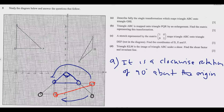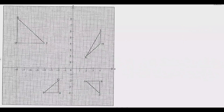Moving to Question B: triangle ABC is mapped onto triangle PQR by an enlargement. Find the matrix representing this transformation. For enlargement, the matrix is given by k 0 / 0 k, where k is the enlargement factor. There are two ways to solve this — using the matrix equation or by joining corresponding points. Let's start with the matrix method.